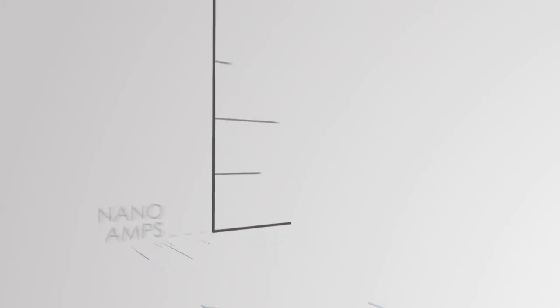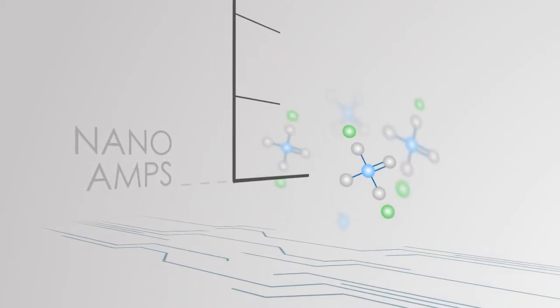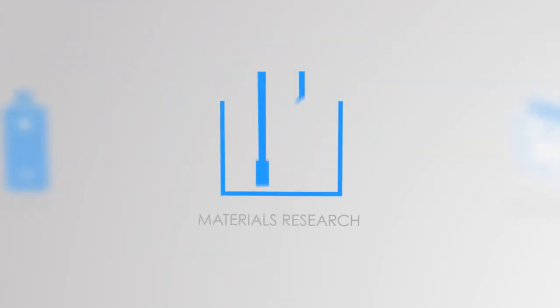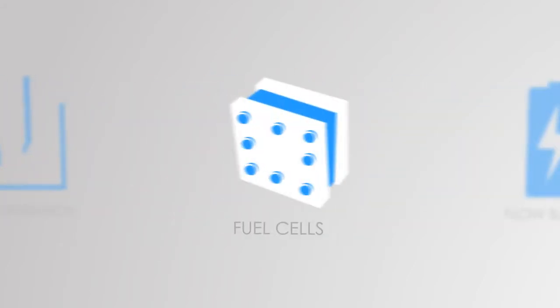Arbin's testing equipment applications range from nano-amp level electrochemistry up to thousands of amps for electric vehicle or flow battery applications. This includes materials research, batteries, capacitors, flow batteries, and fuel cells.